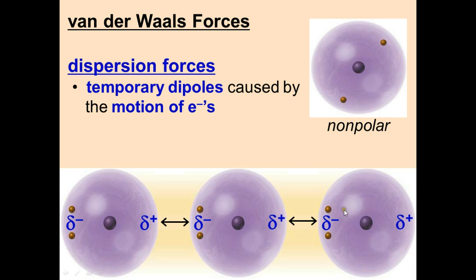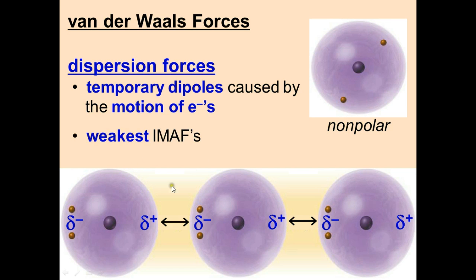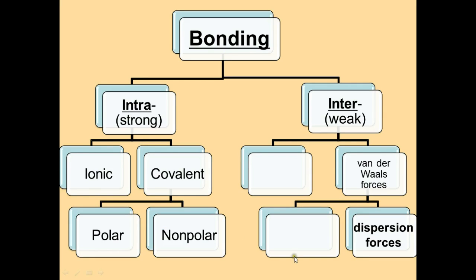The cool part about dispersion forces is that all molecules have them — no matter what. But the downside is that they are the weakest IMAF, because the electrons are always moving. Once they move away, the temporary dipole is gone — it only exists when the electrons happen to cluster to one side at the same time.